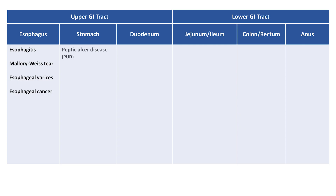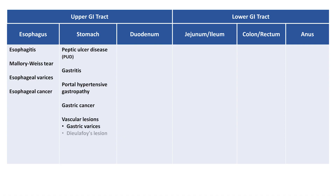Etiologies in the stomach include peptic ulcer disease, gastritis, portal hypertensive gastropathy, and gastric cancer. There are three primary vascular abnormalities in the stomach: gastric varices; a Dieulafoy lesion, which is a single tortuous artery in the gastric mucosa that is histologically normal but of unusually large diameter and can spontaneously rupture; and gastric antrovascular ectasia, also known as the watermelon stomach due to its endoscopic appearance.